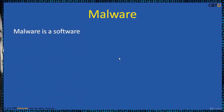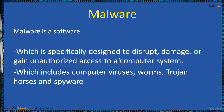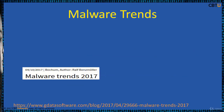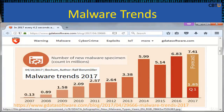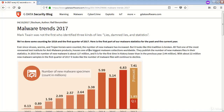Let us understand what malware is. Malware is software specifically designed to disrupt, damage, or gain unauthorized access to a computer system, which includes computer viruses, worms, Trojan horses, spyware, etc. Let us see the malware trends around the world. Here is the malware trends information from the G Data Security Blog. Please explore this site whenever it's convenient.